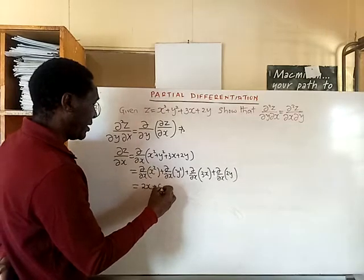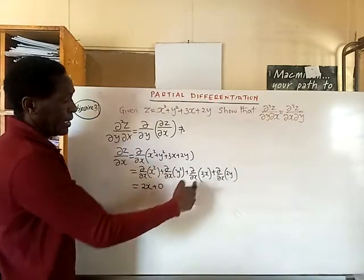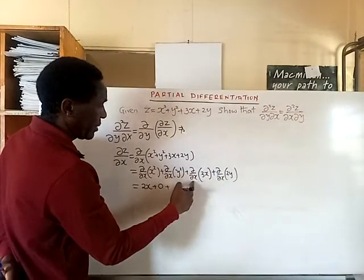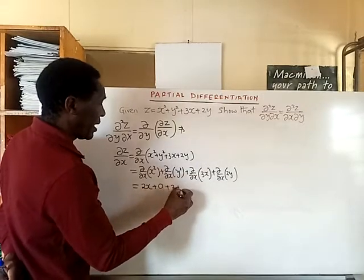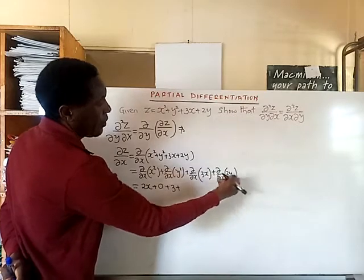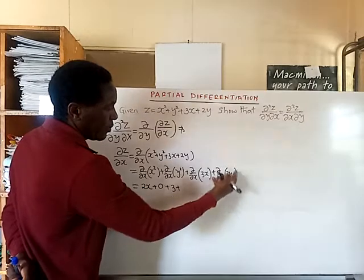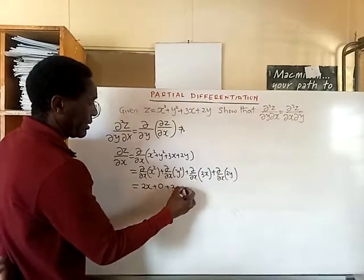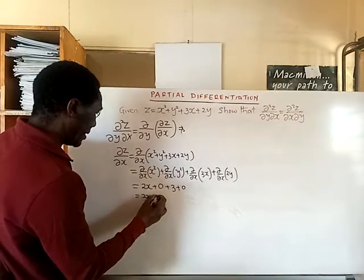The second term gives 0 because we are differentiating a constant. The third term, partial derivative of 3x with respect to x, gives us 3. And 2y is a constant with respect to x, so the last term gives 0. Therefore we get 2x + 3 as the first partial derivative of z with respect to x.